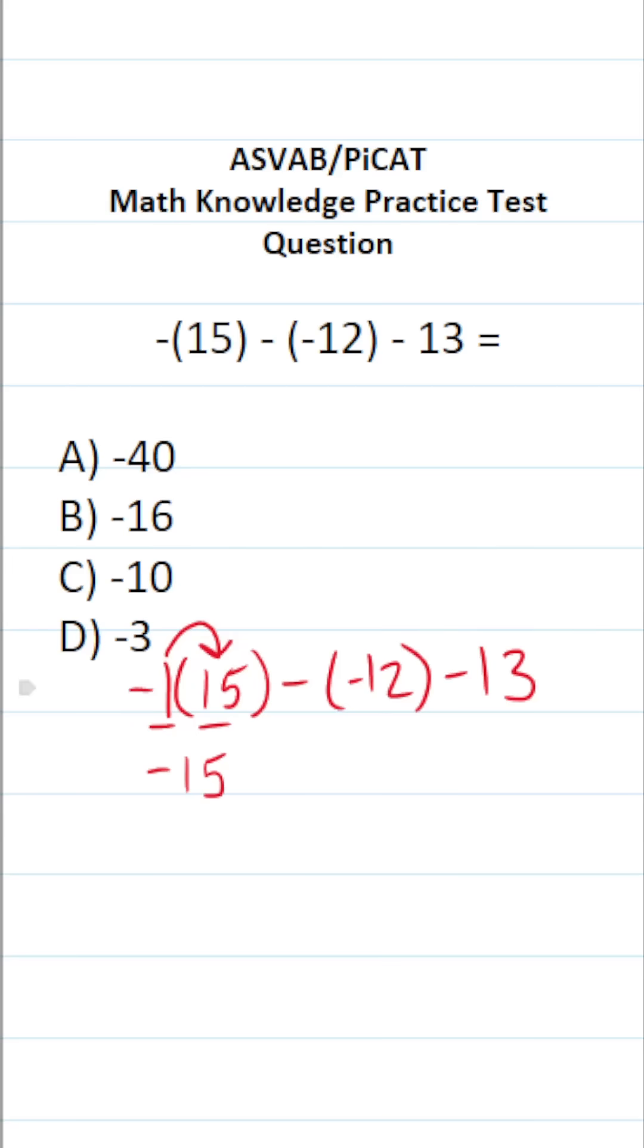Minus minus always becomes plus. So if you ever see minus minus, you're always going to make it plus. So this is negative 15 plus 12 minus 13.